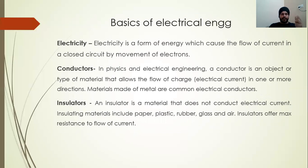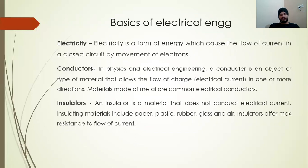Now let us first revise some basics of electrical engineering. What is electricity? Electricity is a form of energy which causes the flow of current in a closed circuit by movement of electrons — simply, the flow of free electrons from one place to another. Second definition: what is a conductor? A conductor is a device that allows electricity to pass through it from one place to another, allowing the flow of charge in one or more directions. Main examples of conductors are copper and aluminium. Third definition: what is an insulator? An insulator is a material that does not allow electricity or electric current to flow through it. The best examples are wood, glass, and rubber.